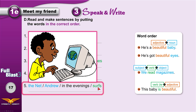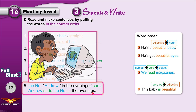Subject, verb, object: Andrew surfs the net in the evenings. We could put the time expression first: in the evenings, Andrew surfs the net — that is also correct.